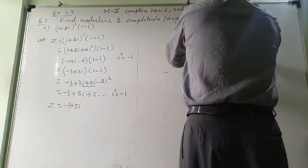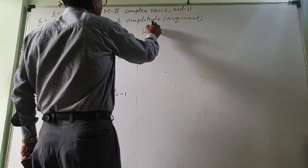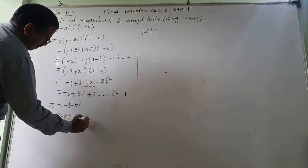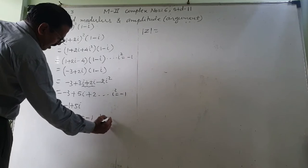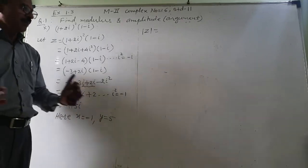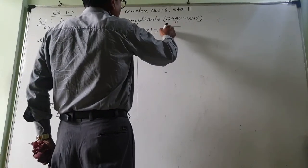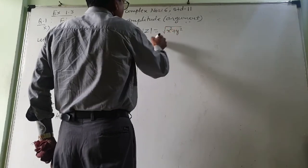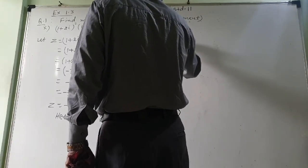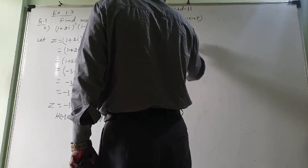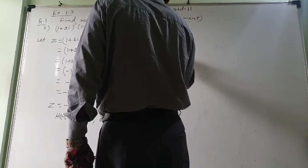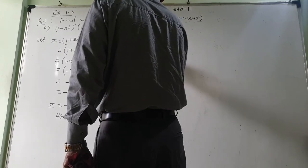Now I will find modulus. Here x = −1 and y = 5, or a = −1 and b = 5. Modulus z = √(x² + y²) = √((−1)² + 5²) = √(1 + 25) = √26. So modulus z = √26.